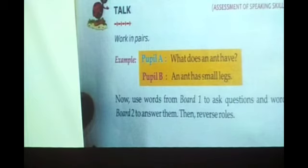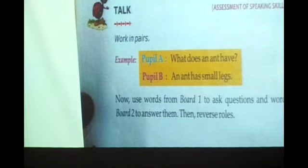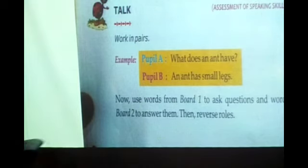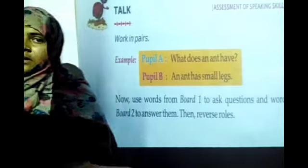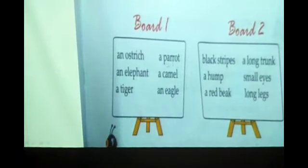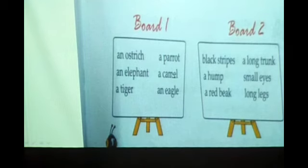Next, talk — work in pairs. Person A: what does an ant have? An ant has small legs. Use words from board 1 to ask questions and words from board 2 to answer them, then reverse roles. This bit is to improve your English speaking skills. Board 1 is for questions — for example, what does an ant have?